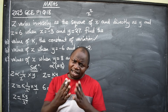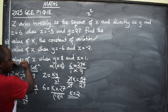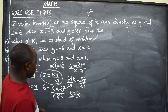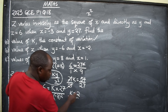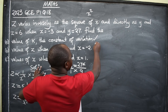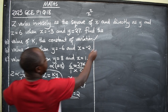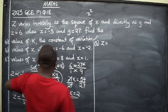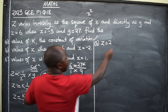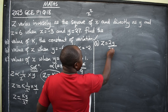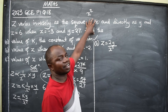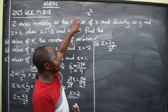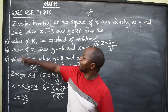Our K is 2. Immediately when you find the value of K, before attempting parts B and C, substitute it back into the equation so that you find the equation connecting this variation. The equation becomes Z equals 2Y over X squared. This is the equation connecting the variation, and it will be used to find parts B and C.